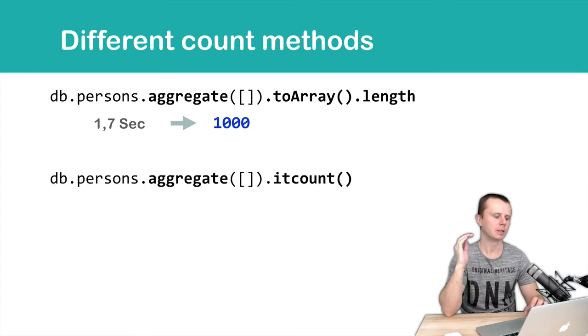Let's look at the next count method: db.persons.aggregate and then itcount method. itcount is a method of the cursor and it will count all documents in the cursor. This operation will take about 1.4 seconds and the result will be the same, 1000.